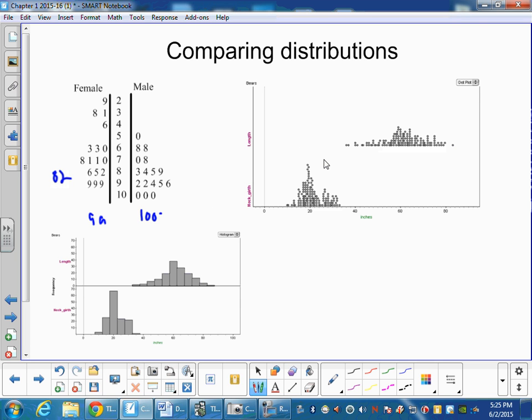Over here is dot plots on top of each other. So you would graph them on the same axis so you can compare the distributions.